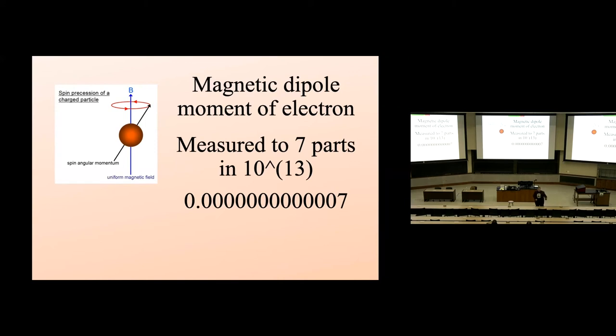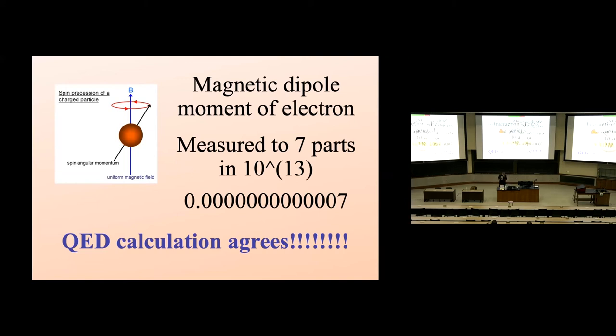Here we have something that we are measuring to the 13 decimal place. We are able to do that. This is what we measure. Now we ask, what does Dirac say? What does the theory say? And they agree to this level. There is no other calculation in physics, in any area of physics, calculation that agrees with an observation to this degree of accuracy. There isn't. And so it is very impressive. It is extremely beautiful. It's remarkable.